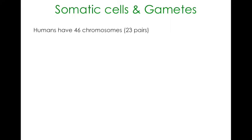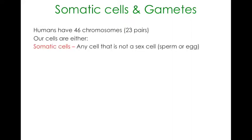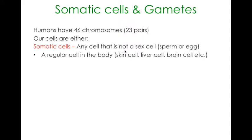In humans there are 46 chromosomes in each cell, and they exist in 23 pairs - 22 identical pairs and either an X and Y or XX depending on the sex of the organism. Our cells are either somatic cells - any cell that is not a sex cell. Basically all the regular cells in your body are somatic cells, and your regular body cells will have 46 chromosomes, 23 pairs: your skin cells, liver cells, brain cells, etc.